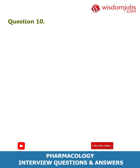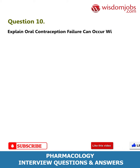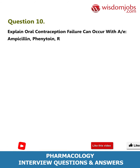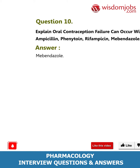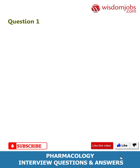Question 10: Oral contraception failure can occur with which of the following — ampicillin, phenytoin, rifampicin, or mebendazole? Answer: Mebendazole.